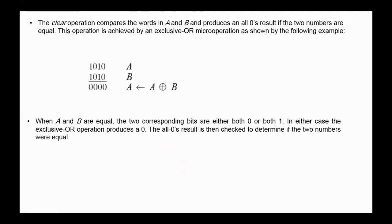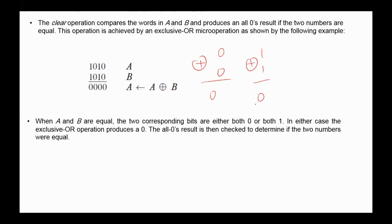The clear operation compares the words in A and B and produces an all-zeros result if the two numbers are equal. This operation is achieved by XORing the contents of the two registers. If the result of the XOR is all zeros, then A and B are equal, because 0 XOR 0 is 0 and 1 XOR 1 is also 0. But if the bits are different, the result of the exclusive OR is 1.